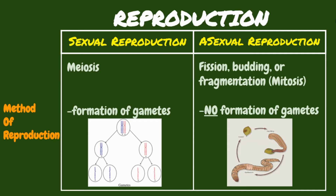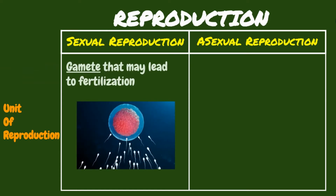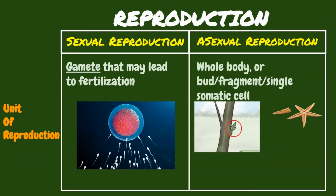In sexual reproduction, there will be formation of gametes, while in asexual reproduction, there will be no formation of gametes. In asexual reproduction, the unit of reproduction is a whole parent body, bud, fragment, or a single somatic cell.